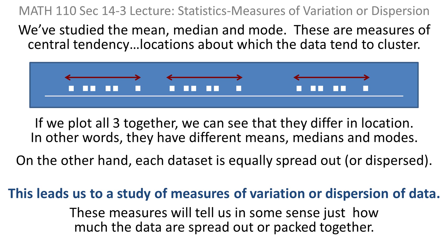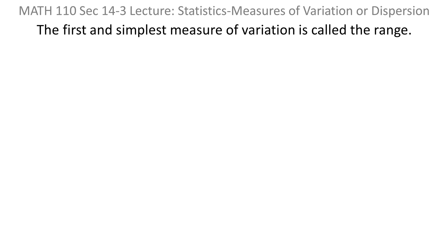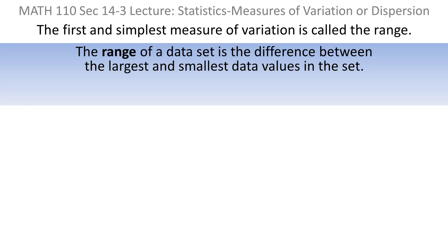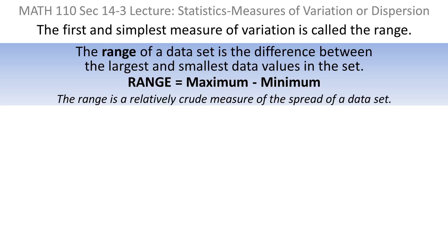And that's important to know. This leads us to measures of variation, sometimes called dispersion of data. These measures will tell us just how much the data are spread out or packed together. The first and probably the simplest measure of variation is called the range. The range of a data set is simply the difference between the largest and smallest data values — the maximum value minus the minimum value. It's a relatively crude measure of spread because it doesn't consider any of the numbers in between; it only considers the largest and the smallest.